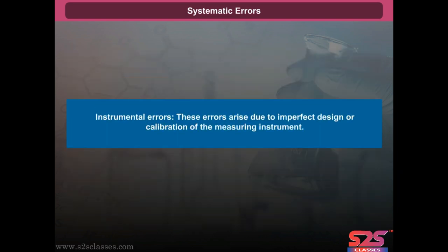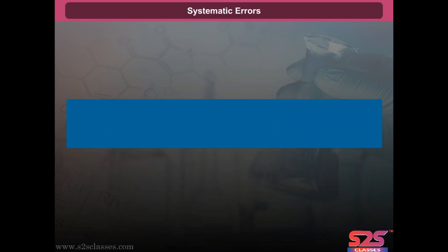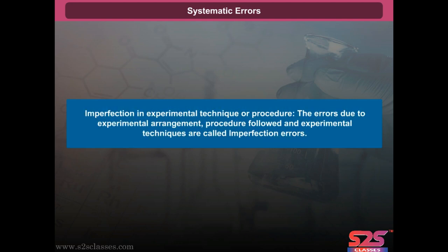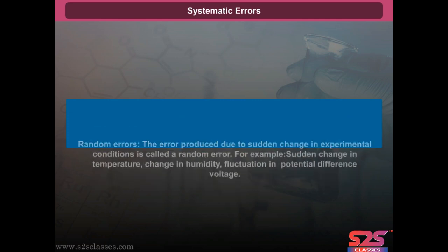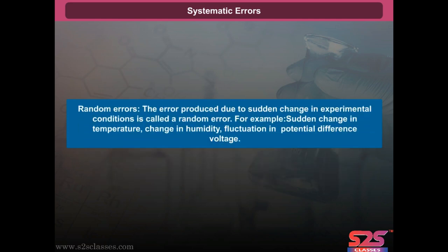Instrumental errors arise due to imperfect design or calibration of the measuring instrument. Imperfection errors are due to experimental arrangement, procedure followed, and experimental techniques. Personal errors arise due to faulty procedure adopted by the observer — for example, making an error in reading a scale. Random errors are produced due to sudden changes in experimental conditions, such as sudden change in temperature, change in humidity, or fluctuation in potential difference (voltage).